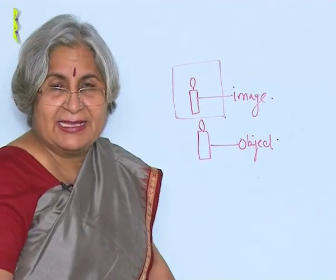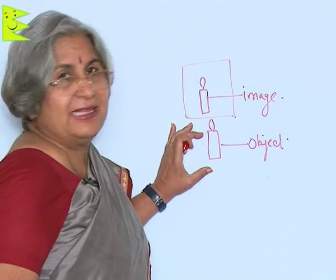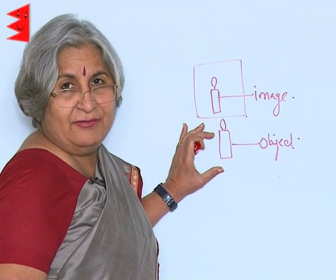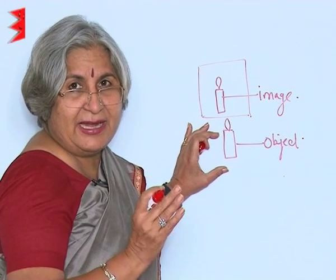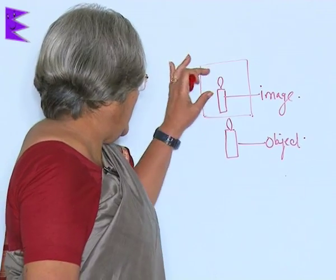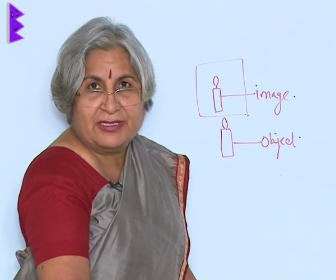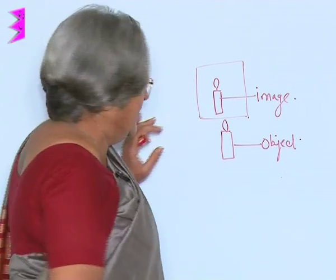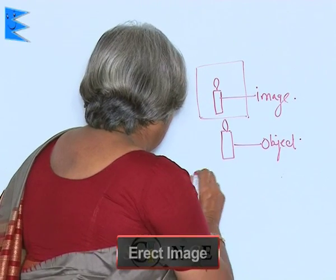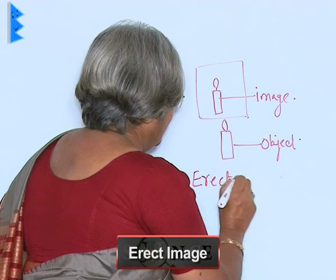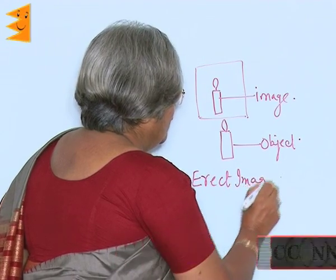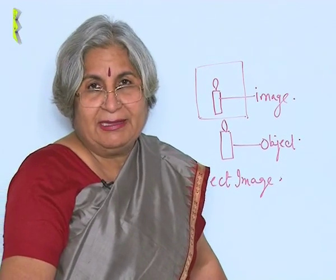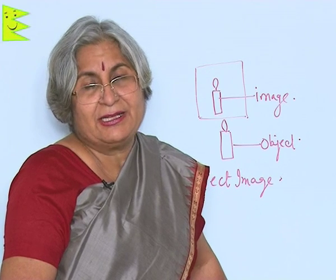What you find is that the image is just like the object — it is in the same direction, meaning the flame in both cases is upwards. An image which is in the same direction as the object is called an erect image. So in a plane mirror, there is an erect image.